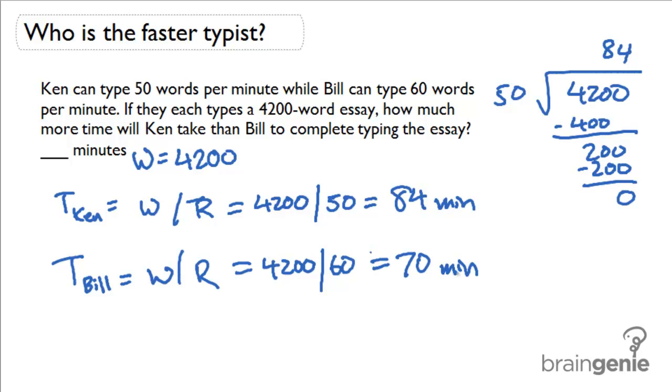So it seems here that Ken will take 14 more minutes than Bill. And how do I get that? Well, I find the difference: 84 minus 70 equals 14 minutes.